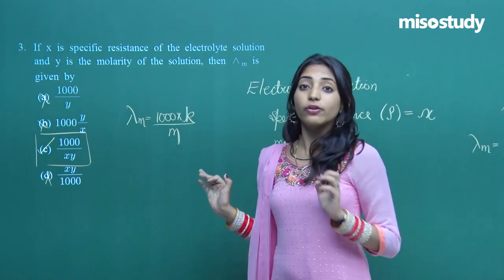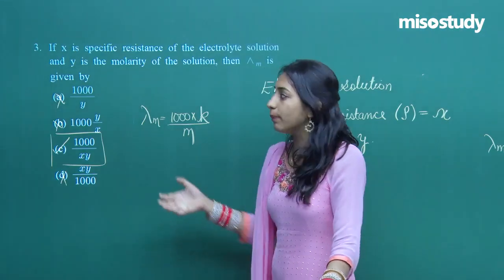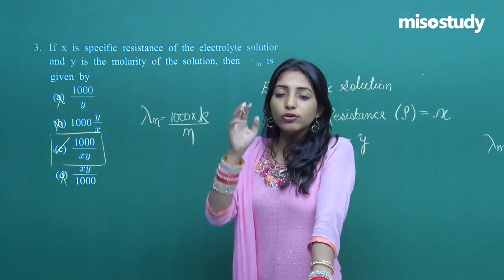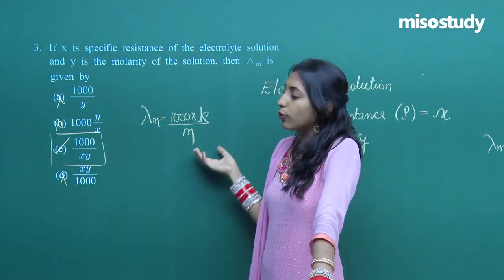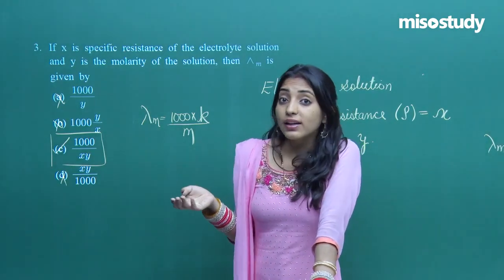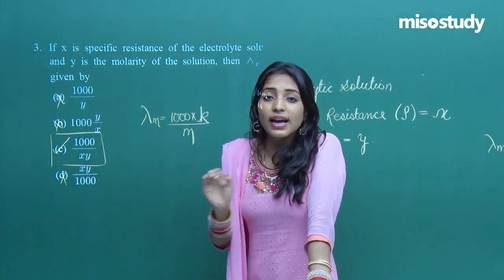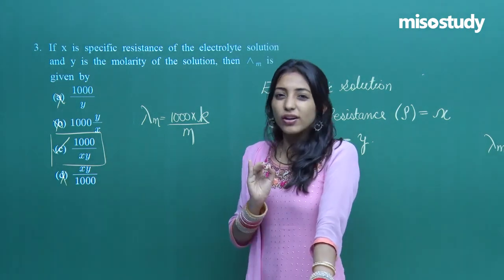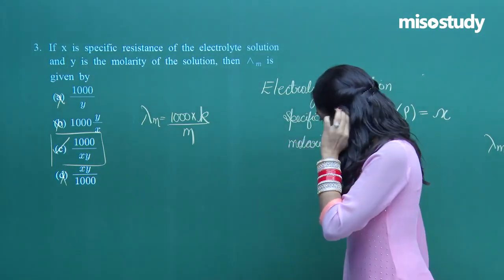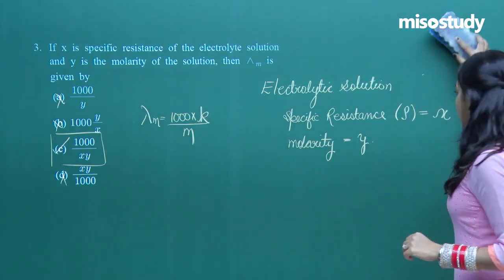Students often get confused because they mistakenly use X directly as specific conductance instead of specific resistance. The question clearly states X is specific resistance, not specific conductance. So please read the question carefully and avoid such careless mistakes in your paper.